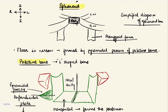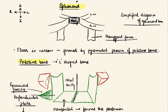Now coming to the sphenoid bone — sphenoid is a very complex bone. With a simplified diagram, this being the body of sphenoid, it has two wings: the lesser wing and the greater wing of sphenoid. From the greater wing there is a continuation downwards known as the pterygoid process. This pterygoid process along with some part of the greater wing forms the posterior wall of the pterygopalatine fossa.